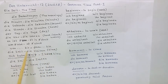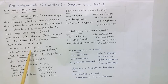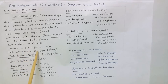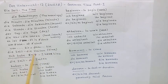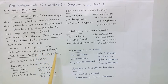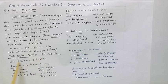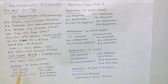Die Zeit, die Zeiten — the time, the times. Ich habe Zeit — I have time. Now, die Zeit, die Zeiten — that is the time, the times. Let us revise the conjugation of the Haben verb.